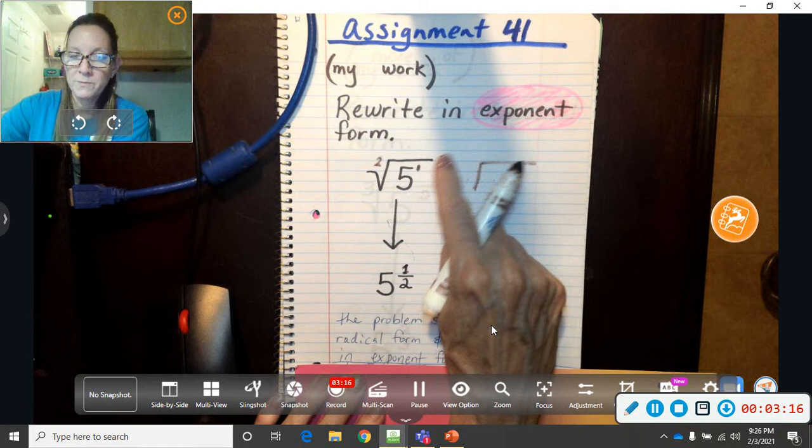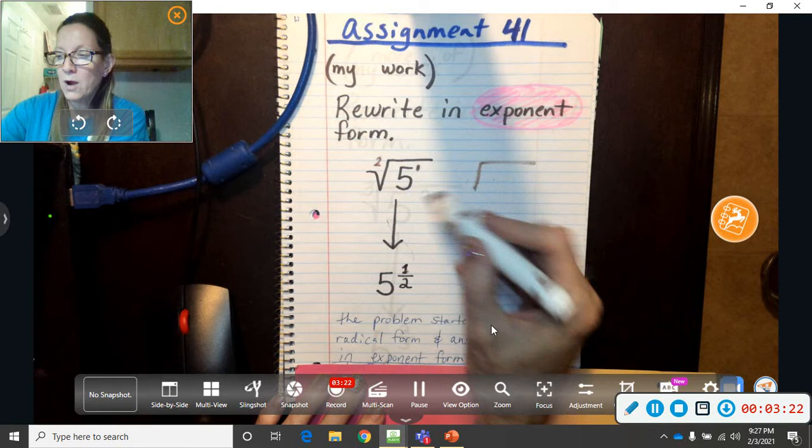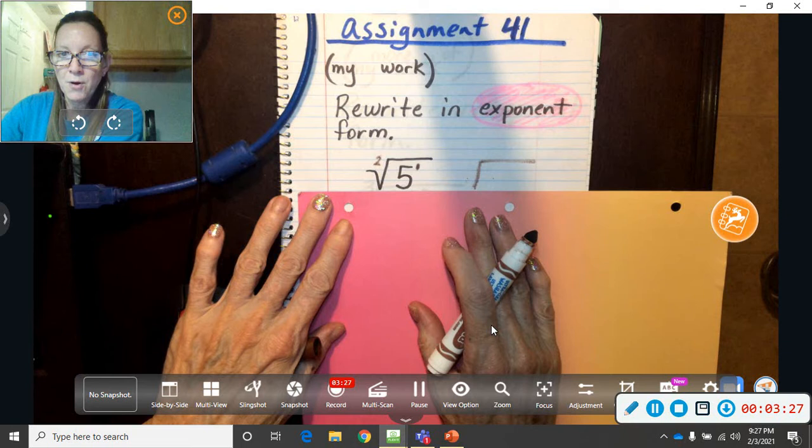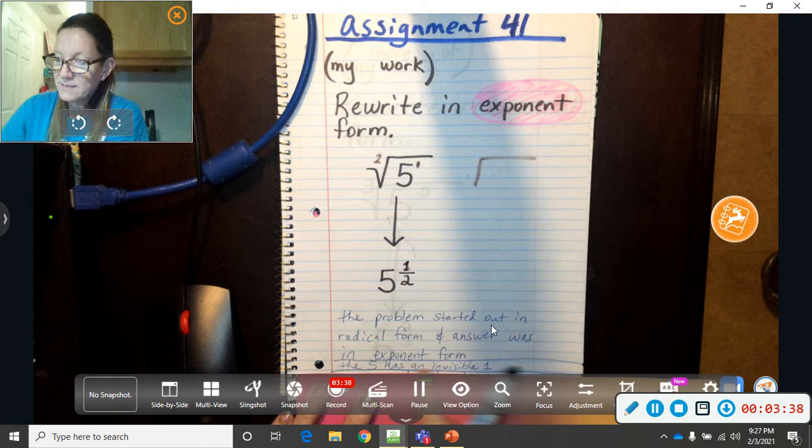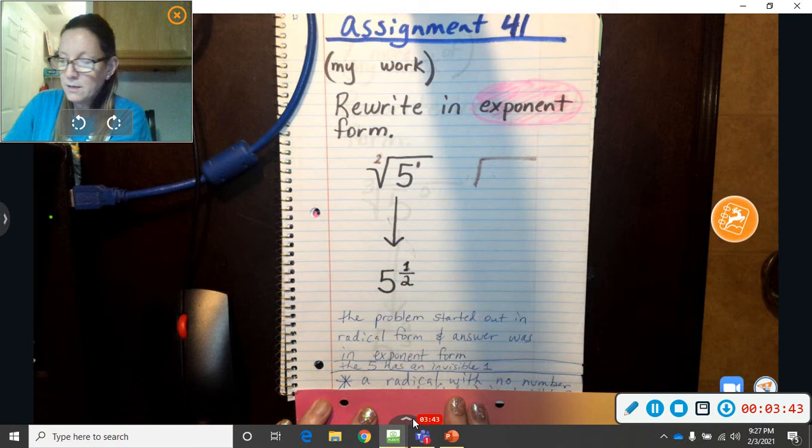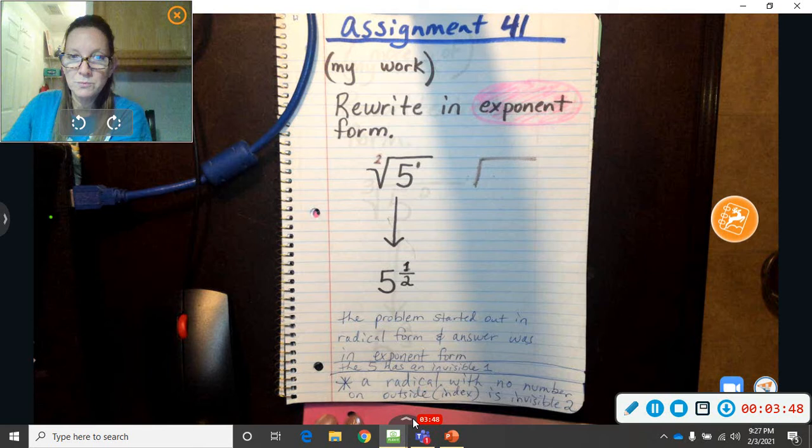Okay, the problem started out in radical form and the answer was written in exponent form. So it started out in radical form and ended up in exponent form. So on your paper, on the EOC, you're not going to draw an arrow. I'm just trying to tell you that's the problem, and then I put the answer down here. I didn't have to put an arrow. That's not part of the procedure, but you can if you want to. The 5 has an invisible 1, so I wrote that there for you to know, and a radical with no number on the outside, so no index, it has an invisible 2. So we already talked about that.